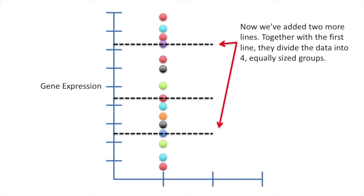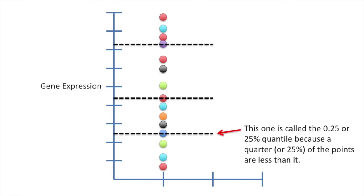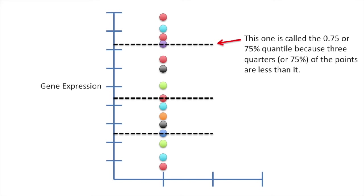Now we've added two more lines. Together with the first line, they divide the data into four equally sized groups. These new lines are quantiles because they divide the data into equally sized groups. This one is called the 0.25 or 25% quantile because a quarter or 25% of the points are less than it. This one is called the 0.75 or 75% quantile because three quarters or 75% of the points are less than it.